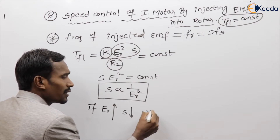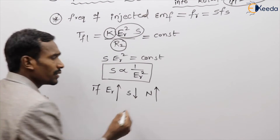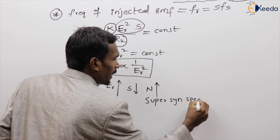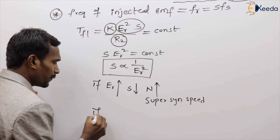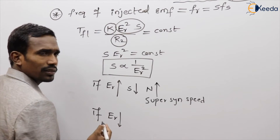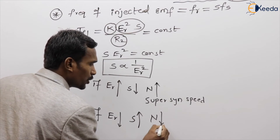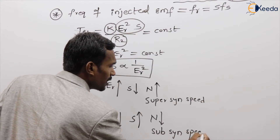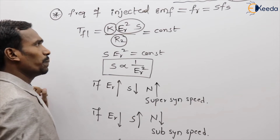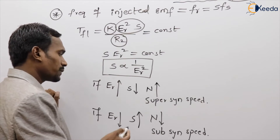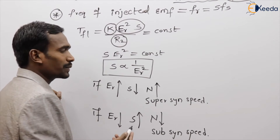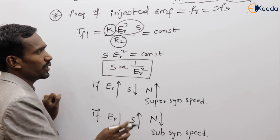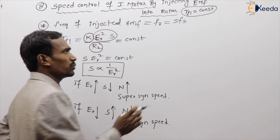If ER increases, slip decreases and speed increases — this is called super-synchronous speed. If ER decreases, speed decreases — this is called sub-synchronous speed. These are the two fundamental outcomes based on whether ER increases or decreases.